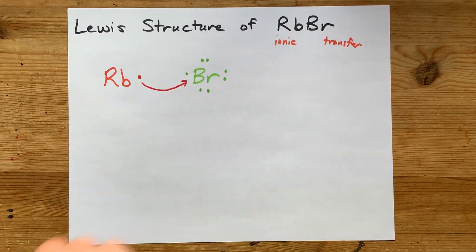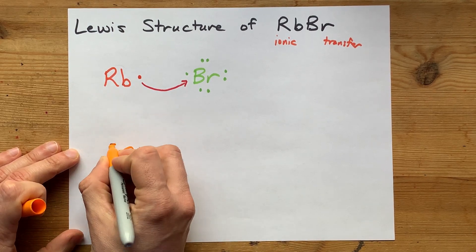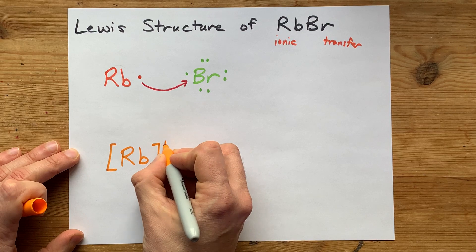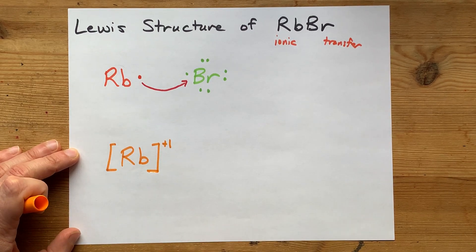Anyways, what's the complete Lewis structure? You're going to draw the Rb with no valence electrons around it. It has a plus one charge because it lost a negative, gives it a positive charge.